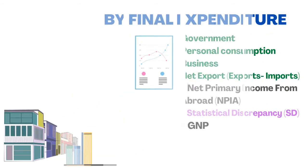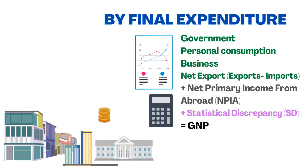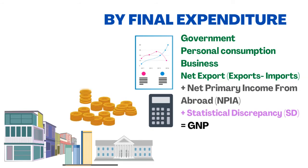Another approach is by final expenditure. It adds government expenditure, personal consumption, business expenses, net exports — that is exports minus imports — plus net primary income from abroad and statistical discrepancy into the GNP equation.